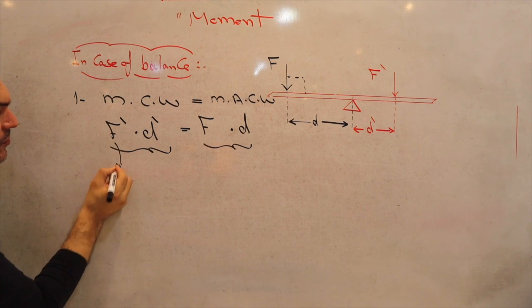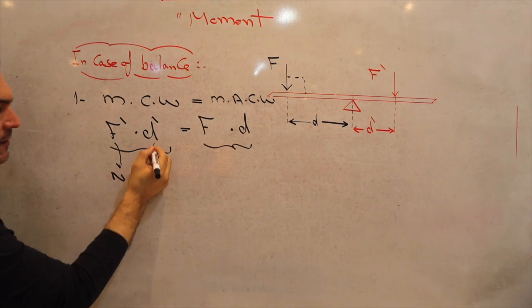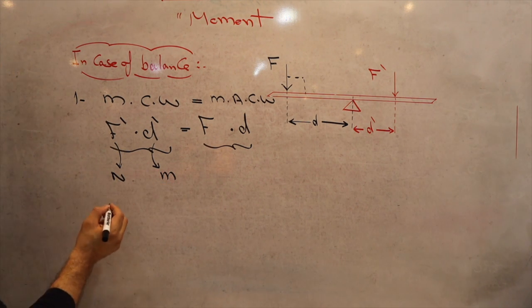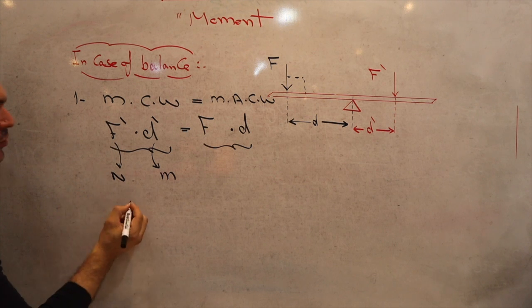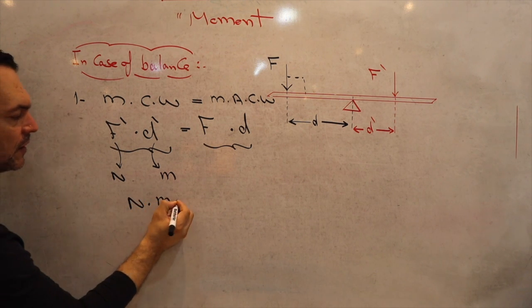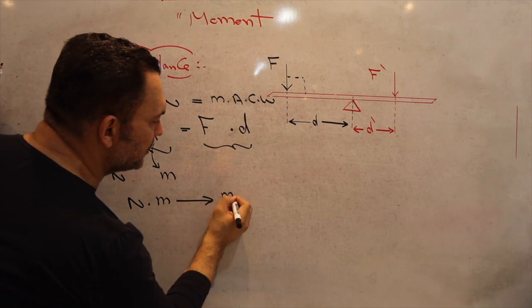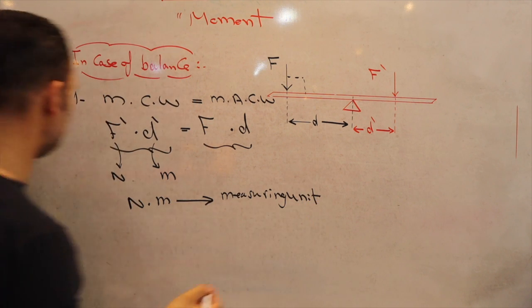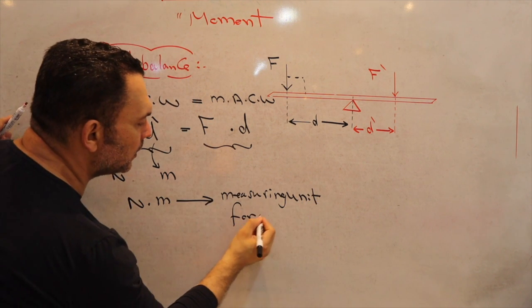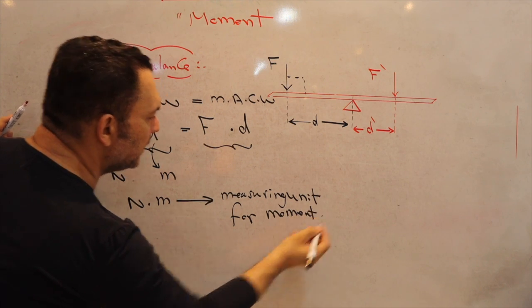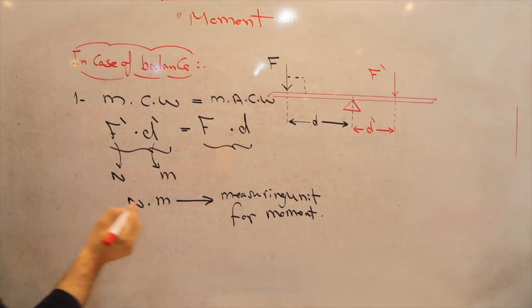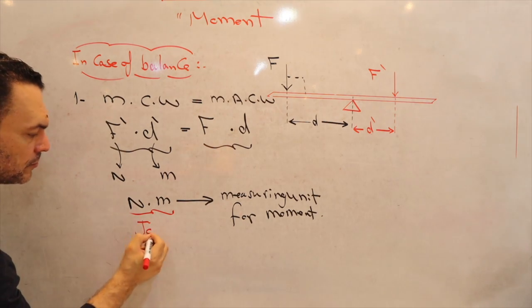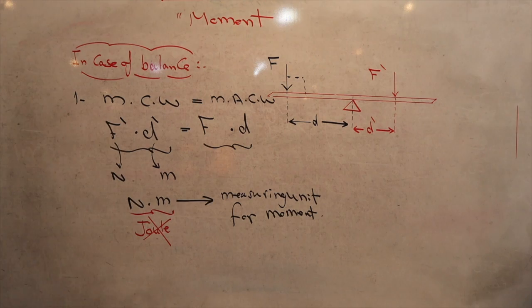F dash is measured in Newtons and D dash is measured in meters in SI units. So the measuring unit for moment is Newton dot meter. Please keep in mind this is the same measuring unit as energy, but you cannot say Joule — please don't. That was the first condition.